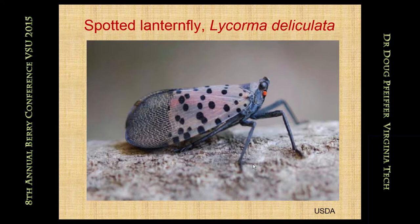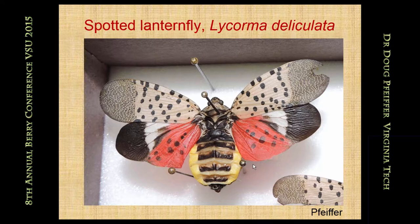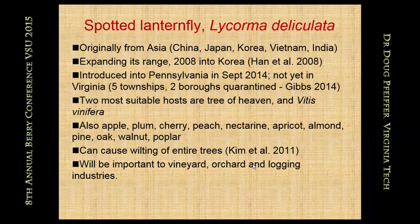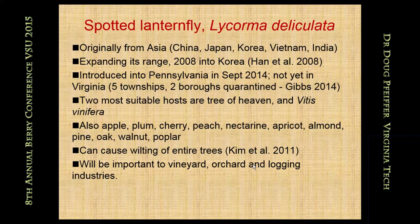This is a new invasive — it's so new it's not even here yet, but I want you to be familiar with it and know what it looks like. It's been introduced into Pennsylvania, and so far that's the only state where it's known. This is spotted lanternfly, another pest from China. Here we have it with wings spread — it's a very pretty insect. It's from all over Asia, but in 2008 it started to expand its range and reached Korea for the first time, thought to be expanding because of warming winters. It was introduced into Pennsylvania in 2014, and there are now five townships and two boroughs quarantined for spotted lanternfly.